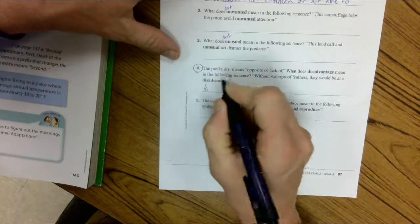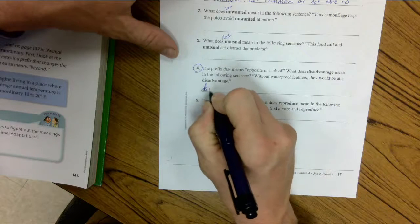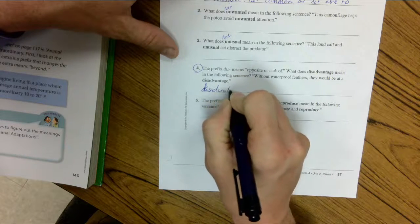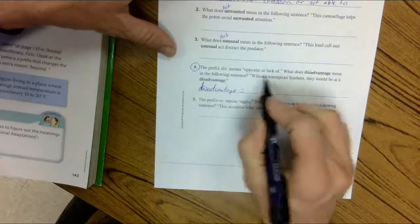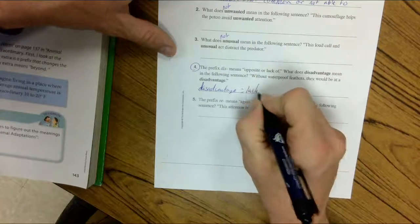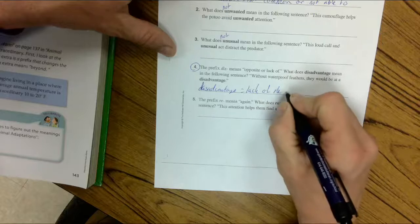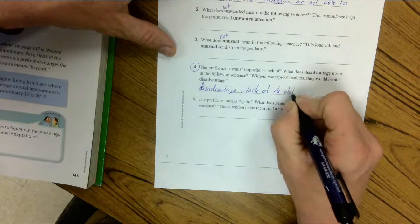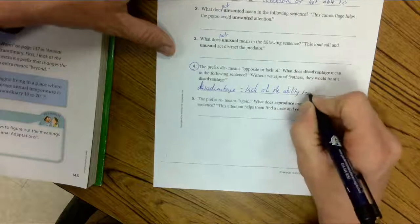I'm going to put down—oops, I should have wrote disadvantage first. Disadvantage, the opposite or lack of, lack of the ability to be waterproof.